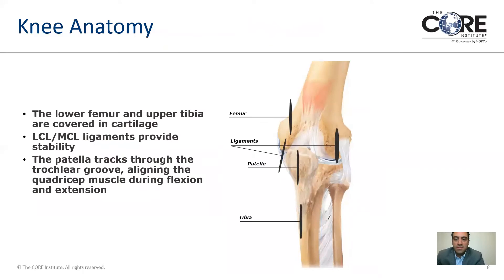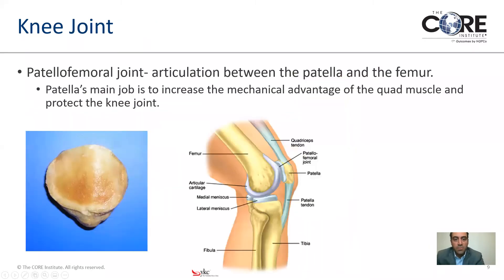Knee anatomy consists of three bones which are the main parts of the joint: the femur, the tibia, and the patella. These are stabilized by four main ligaments, which we'll talk about later. The patella tracks in the trochlear groove and is connected at the top of the knee with the quadriceps tendon and at the bottom with the patella tendon. The patellofemoral joint is a common cause of knee pain, especially in the front of the knee between the patella and the femur. The patella's main job is to increase the mechanical advantage of the quad muscle and protect the knee joint from the front.